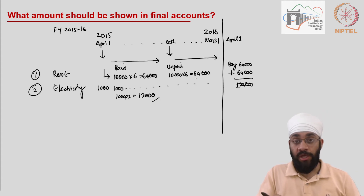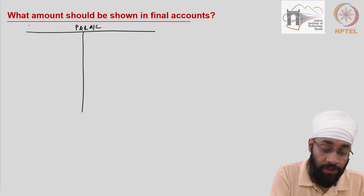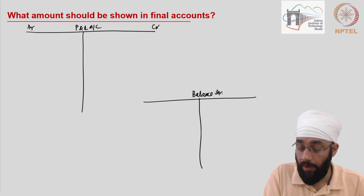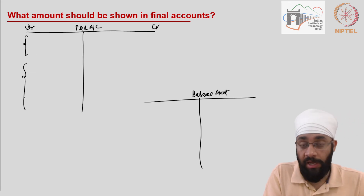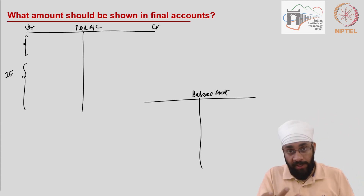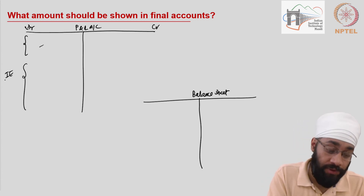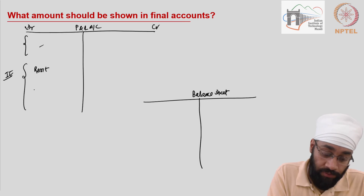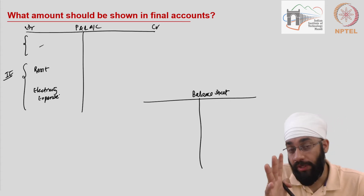The question is, in the final accounts, when we are preparing the profit and loss account — debit side and credit side — and the balance sheet, what amount do we write? We clearly know that rent and electricity both are going to be considered as indirect expenses. This is a store of finished goods, a sales store. So here we are going to show rent and electricity expense. The question is what amount is to be shown.